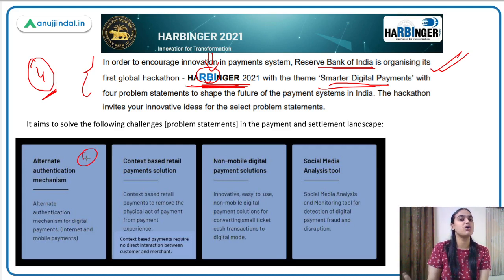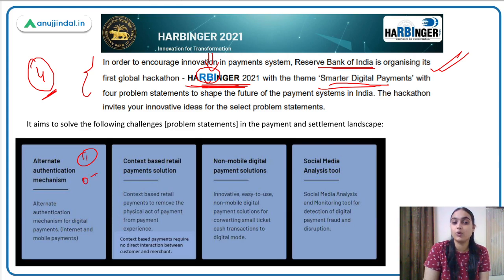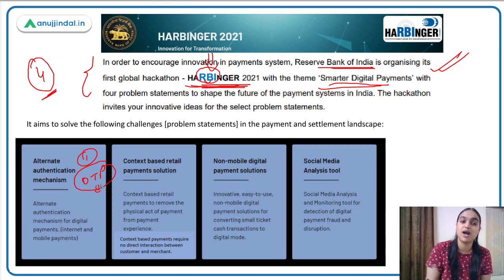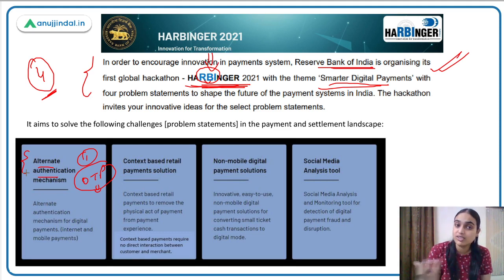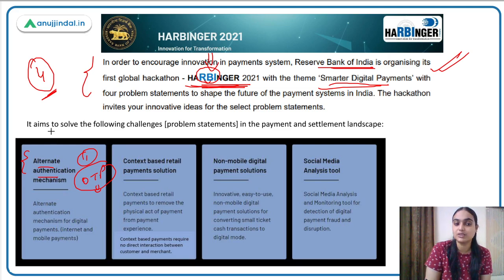The first problem statement is alternate authentication mechanism. In current digital payments, we usually use a PIN number, CVV, and OTP to process a transaction. There have been a lot of frauds happening with OTPs. Because of this, the event is asking participants to come up with an alternate authentication mechanism — solutions beyond OTP-based authentication that can reduce fraud.